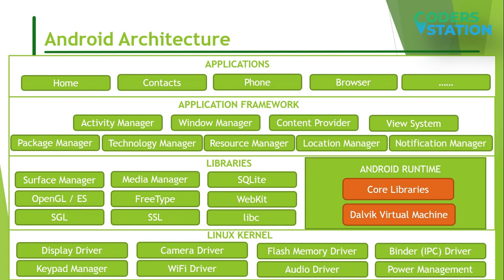The features of Linux kernel are: Security — the Linux kernel handles the security between the application and the system. Memory management — it efficiently handles the memory management, thereby providing the freedom to develop our apps. Process management — it manages the process that allocates the resources to the processes whenever they need data. Networks — it efficiently handles the network communication. Driver Model — it ensures that the application works properly on the devices and hardware manufacturers are responsible for building their drivers into the Linux kernel.